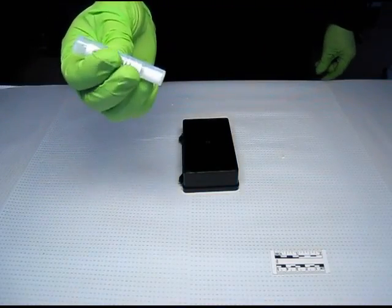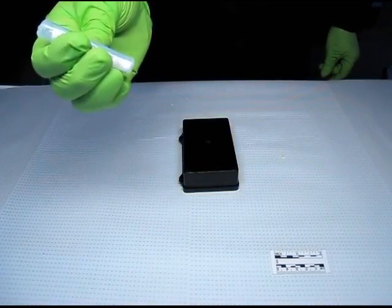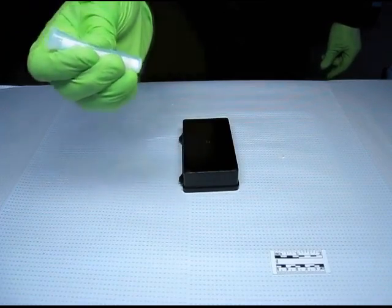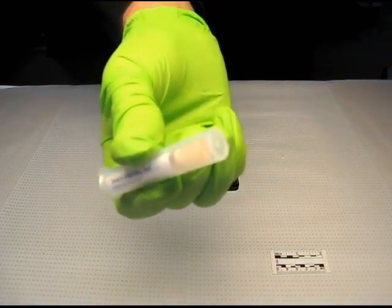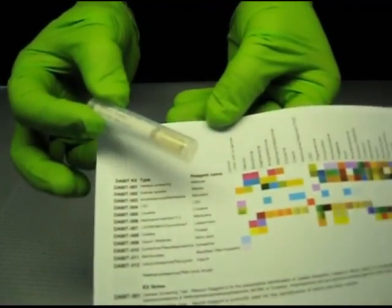Look for a color change on the sampler tip. Consult with the color chart. In this case, the color closely matches methamphetamine. Refer to the instructions to verify these steps and the results.